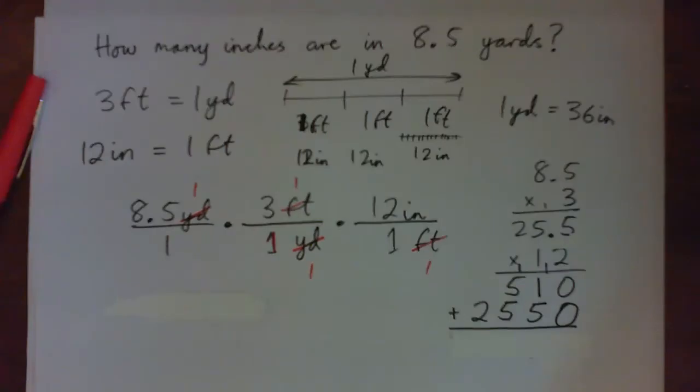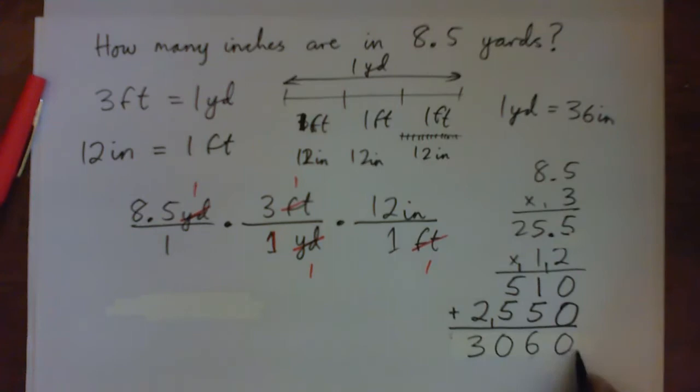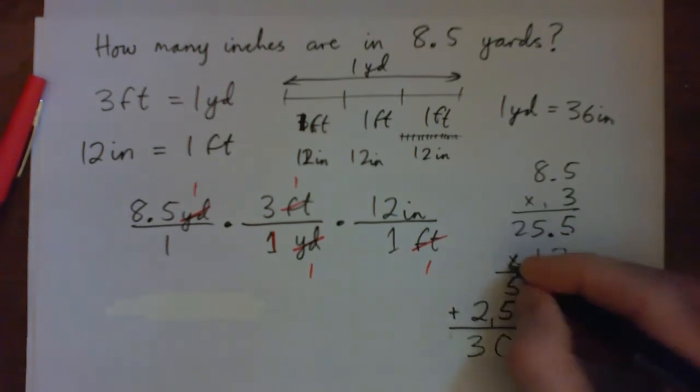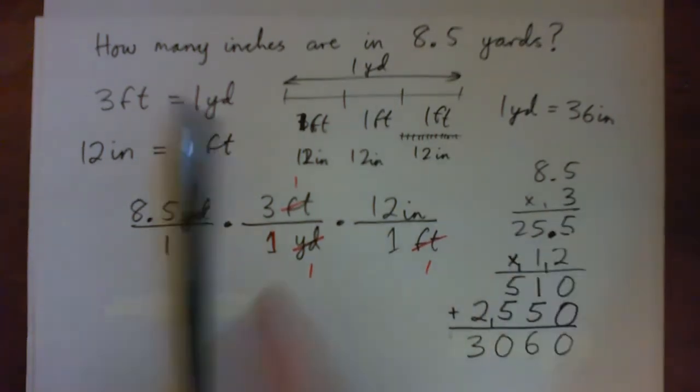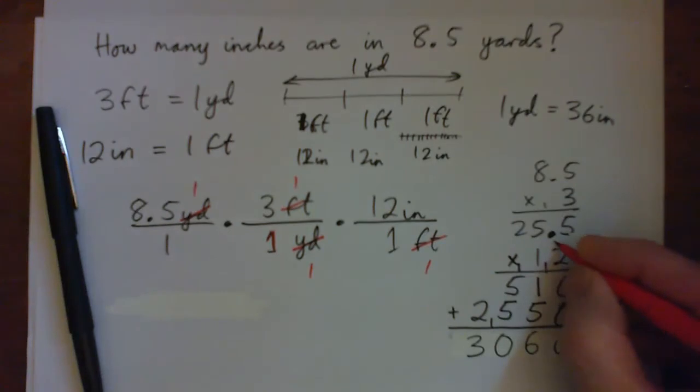And add these guys together. So when I add these together I get zero and zero is zero, one and five is six, five and five is ten carry one, one and two is three. Three, zero, six, zero.